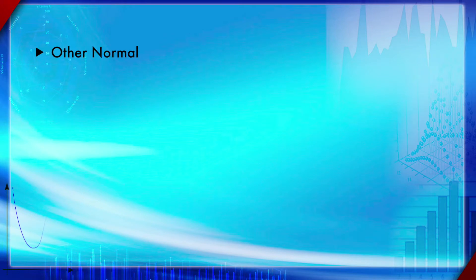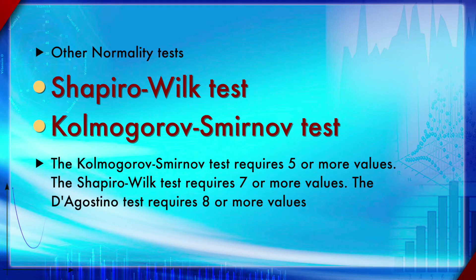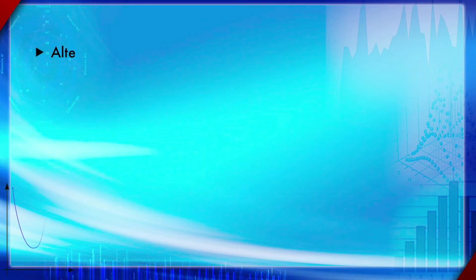There are other normality tests as well — for example, the Shapiro-Wilk test and the Kolmogorov-Smirnov test. For the Kolmogorov-Smirnov test you need five or more values; fewer than five and none of these normality tests will work. The Shapiro-Wilk test requires seven or more values, and the Omnibus K2 test requires eight or more. It is always better to have many elements in your data set, especially for the Omnibus K2 which depends on skewness and kurtosis — coefficients that themselves depend on sample size. Ideally the sample size should be more than 3000.